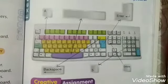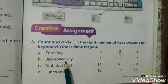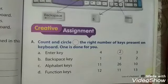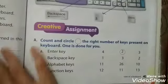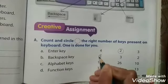So we circled on two for enter key. Now next is backspace key — there is only one backspace key present in our keyboard. This is our backspace key, so we have to circle on the number one.